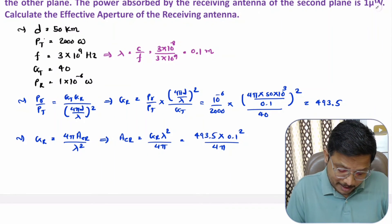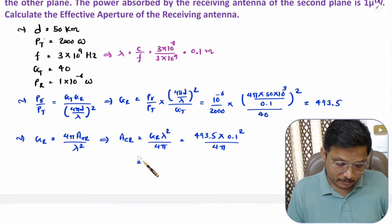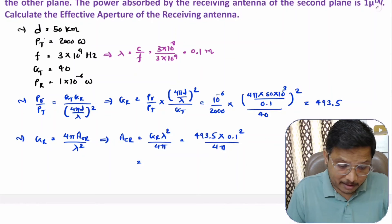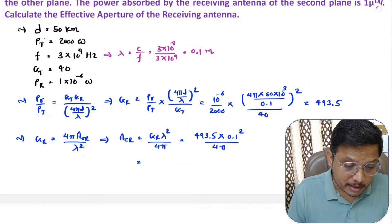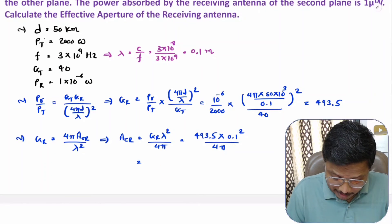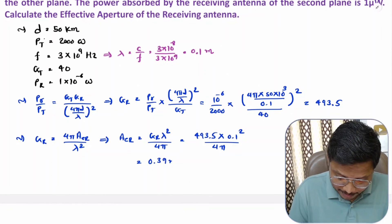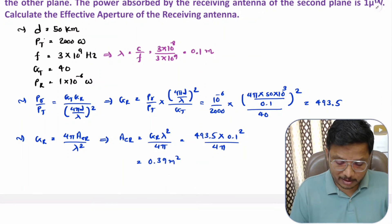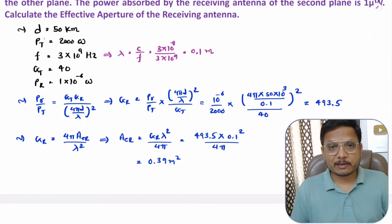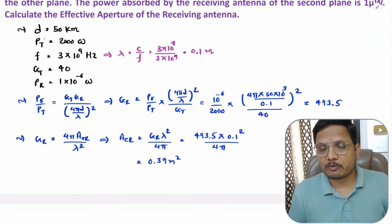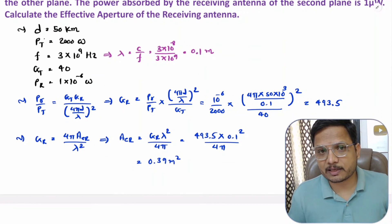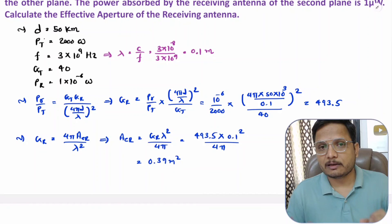Solving in the calculator, the effective aperture of the receiving antenna is 0.39 square meters. That is how simply one can solve questions based on Friis transmission equations.